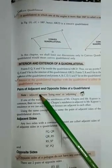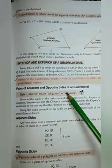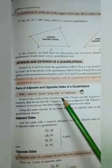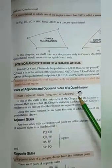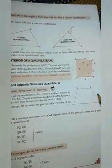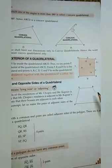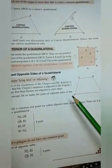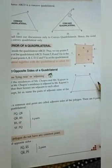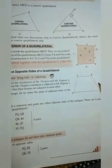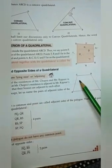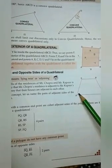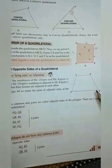Now, pairs of adjacent and opposite sides of a quadrilateral. Adjacent means lying near or adjoining. In quadrilateral PQRS, the adjacent side pairs are: PQ and QR, QR and RS, RS and SP, and SP and PQ.